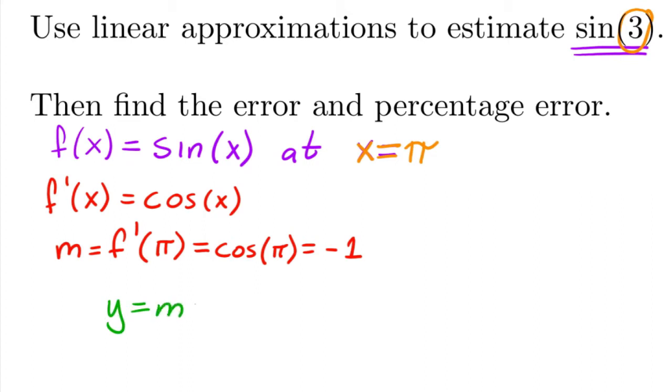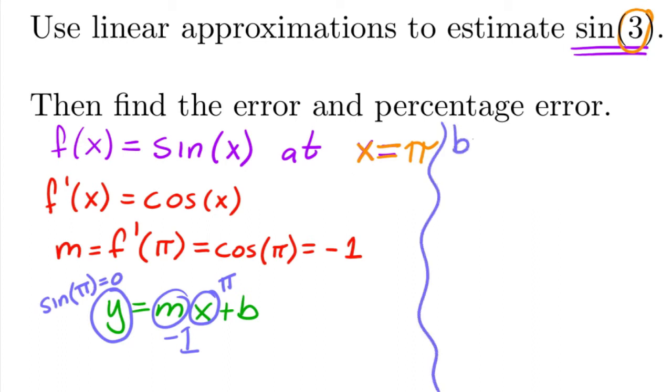Okay, so then to find the y-intercept, we have y equals mx plus b. So we have the slope, which is negative one, the x value, which is π, and then the y value we find by plugging our point π inside of sine. So this is going to be sine of π, which is zero. So then we get a value for b of simply π.